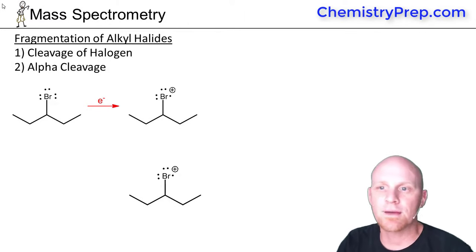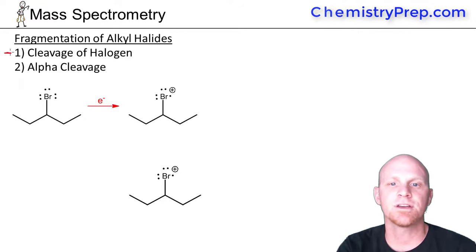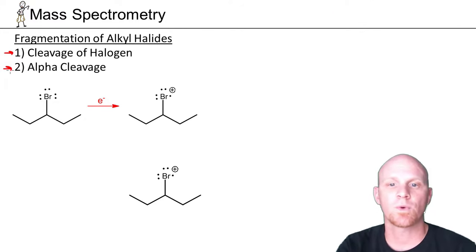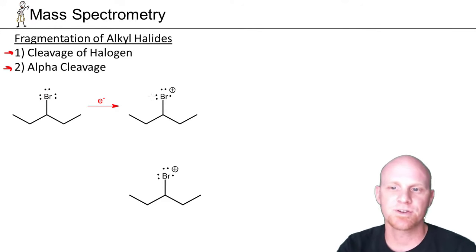We'll now take a brief look at the fragmentation of alkyl halides. There are two primary ways: the first is cleavage of the halogen itself, and the second is what we'll call alpha cleavage. We'll start with cleavage of the halogen here.